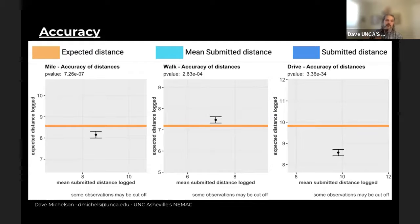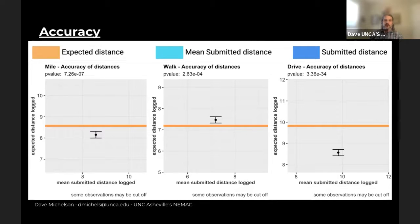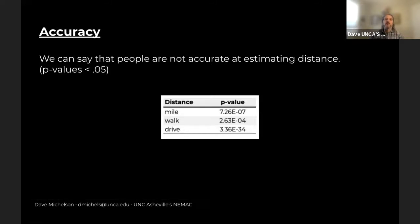Looking at accuracy — these are the t-test results showing confidence intervals. The orange is the expected distance. In no case, when you look at the p-values, were people accurate. The miles were underestimated, the walk was slightly overestimated, and drive time was underestimated. So it turns out that people are actually not accurate at estimating distance on maps at all. That's important to know when you're building web apps and asking users questions about distance — like things within a mile of a location.